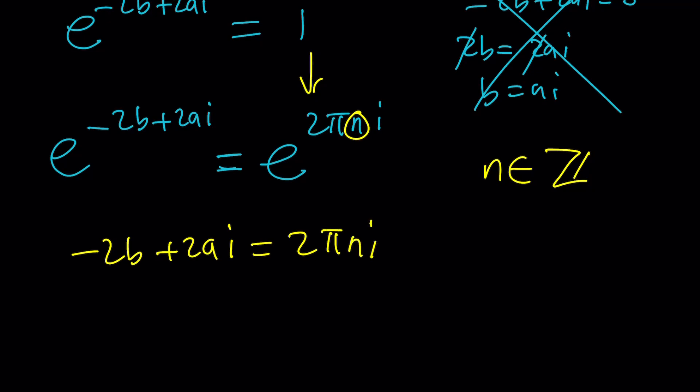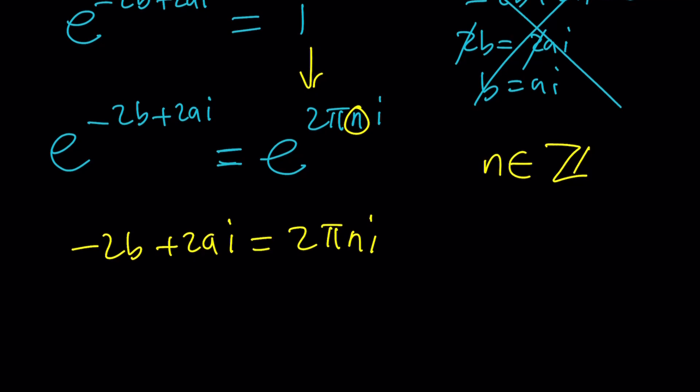Negative 2b plus 2ai equals 2 pi n i. Obviously, we can go ahead and divide everything by 2, or just think about it this way. We have a complex number on the left and a complex number on the right. When are two complex numbers equal? When the real parts are equal and the same thing goes for the imaginary parts.